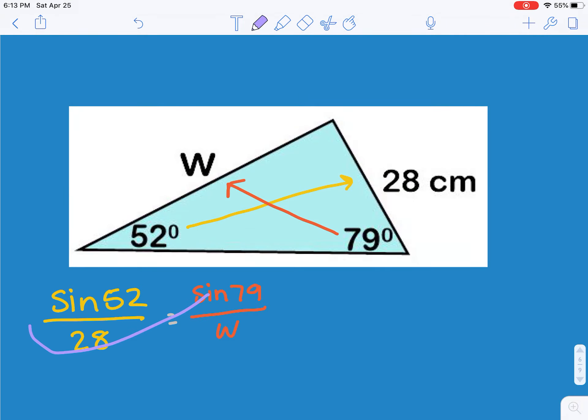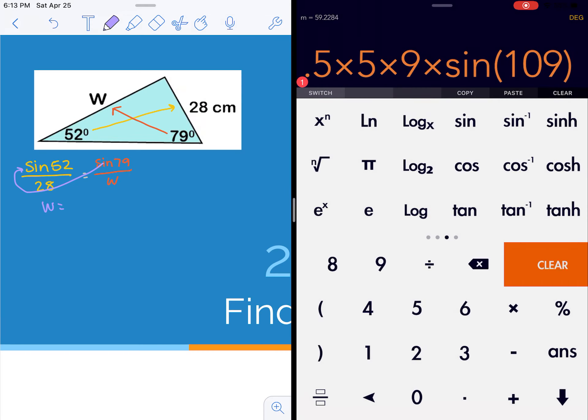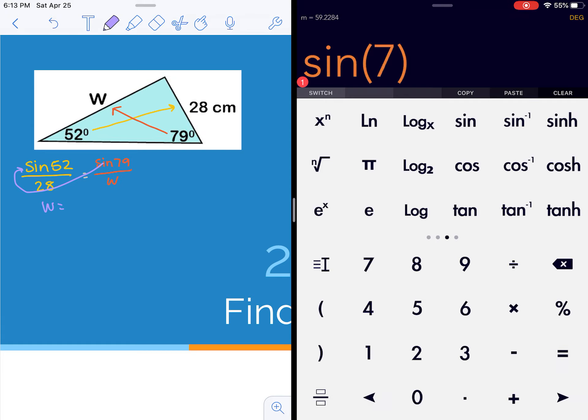Now I just need to cross multiply and divide to solve for W. I'm going to do the entire thing in my calculator. So I have the sine of 79 times 28, divide that answer by the sine of 52 degrees.